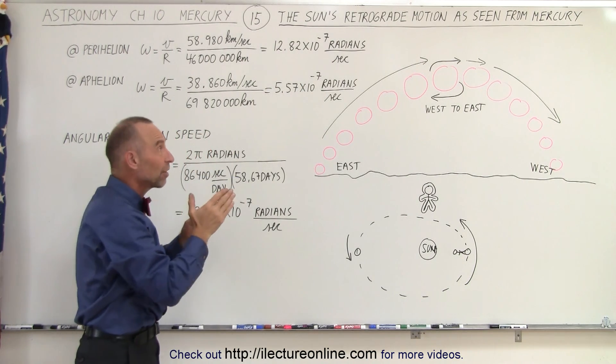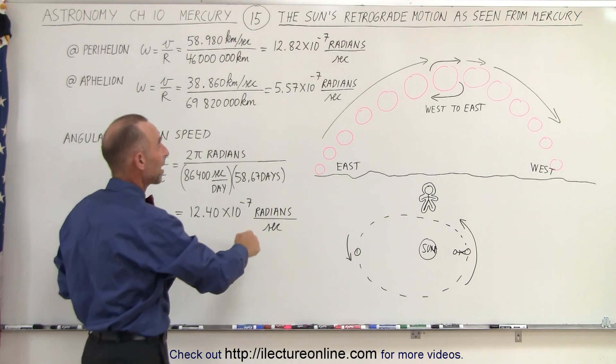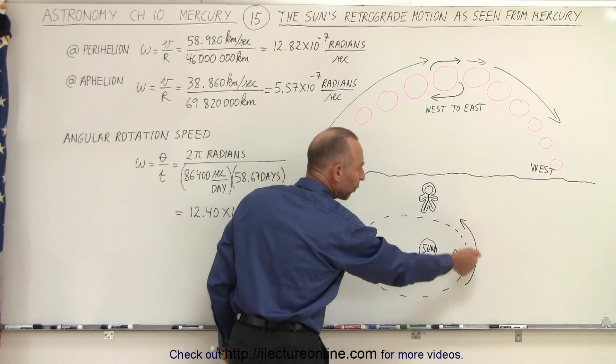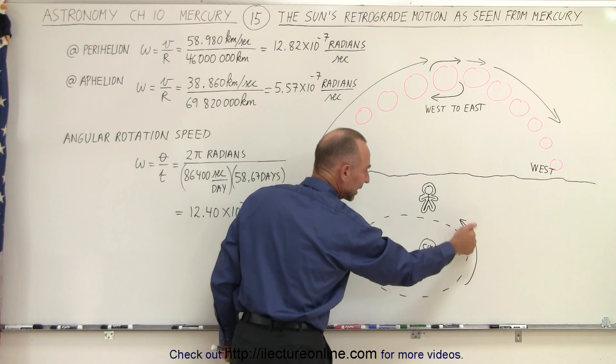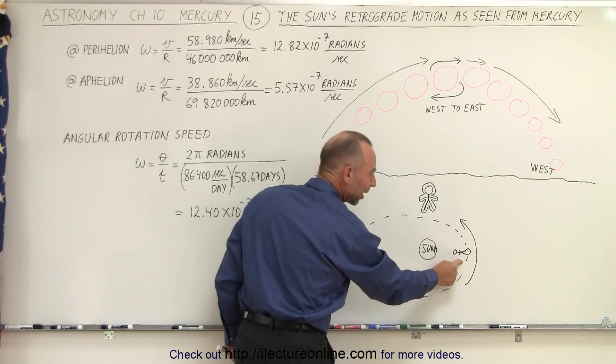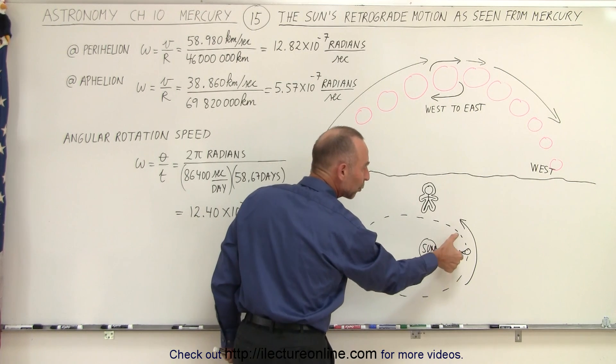That's why during the period of time when you're in this position, if the speed is so high at perihelion that the orbital angular velocity is greater than the rotational angular velocity, the Sun will appear to move backwards.